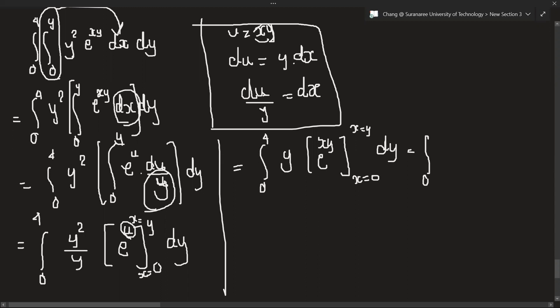So 0 to 4. So this is 1. When we put x as 1, it will be 1 times y, so e^y. When x is 0, 0 times y will be e^0. So 0 to 4, when we insert this, we get e^y minus e^0 is 1, so we get 1 times y dy.